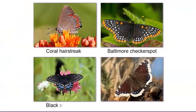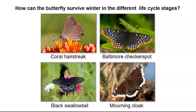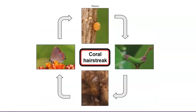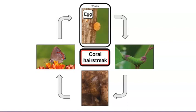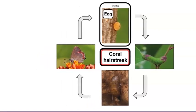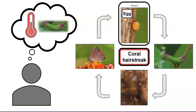I have photographs of the life cycles of four different butterflies. Let's study them together and think about the question: how can the butterfly survive the winter in the different life cycle stages? Let's look at the coral hairstreak first. These photographs show the four stages of the butterfly's life cycle. What stage is the coral hairstreak in during winter? It's an egg during the cold winter months. How can the butterfly survive the winter in this stage? Maybe the coral hairstreak egg waits for the warmer spring months before emerging as a caterpillar. What do you think?